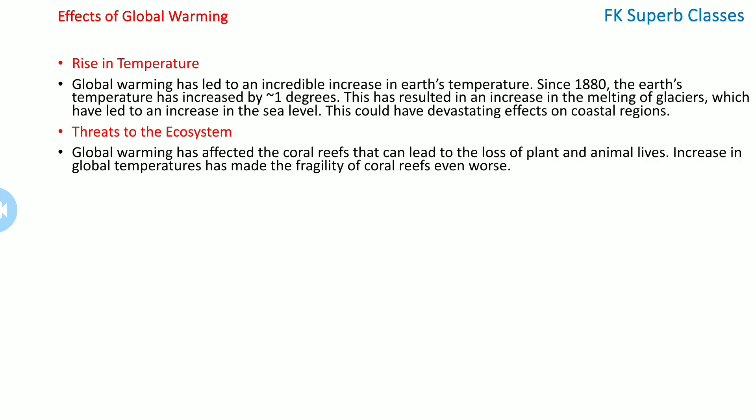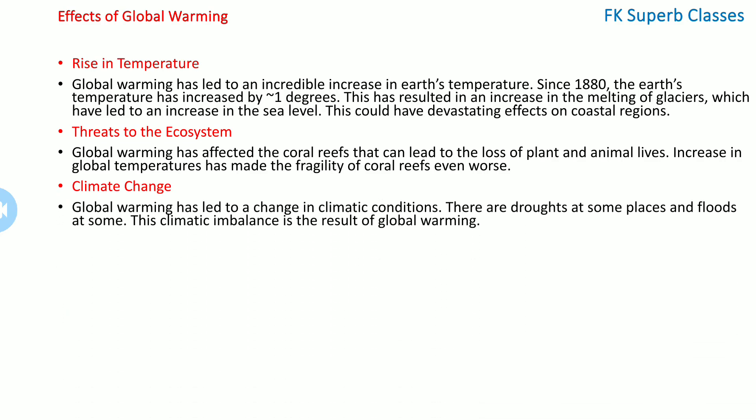Climate change: global warming has led to a change in climatic conditions. There are droughts at some places and floods at others — for example, some areas in India face flooding while others face severe water shortages. This climatic imbalance is the result of global warming.